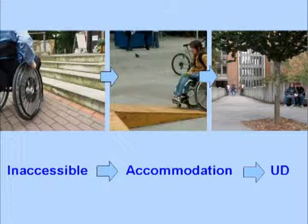On my next slide, I talk about three steps: inaccessible versus accommodation versus universally designed. The first picture shows someone in a wheelchair before four steps — clearly inaccessible. The second shows a plywood ramp with no handrails — an accommodation added after the fact for one person, not built into the original design. The third picture shows a nice sloping ramp into a building with no steps, where people who are walking and people using wheelchairs all use the same entrance — an integrated approach designed into the building from the start.